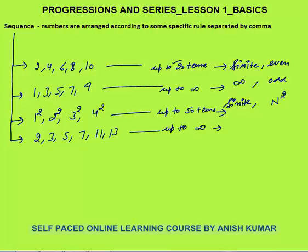The last sequence is 2, 3, 5, 7, 11, and 13 up to infinite terms. This is also an infinite sequence. The logic is that it is a sequence of prime numbers starting from the 1st prime number, that is 2, up to infinity. So that is the meaning of sequence.